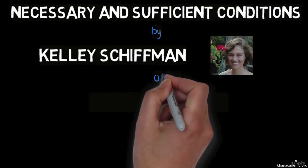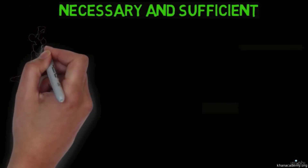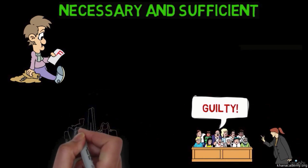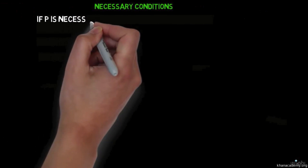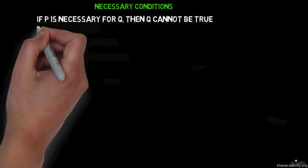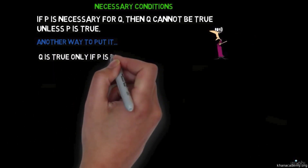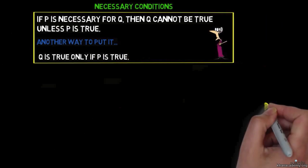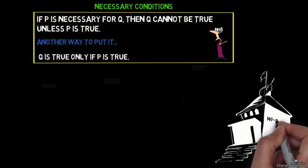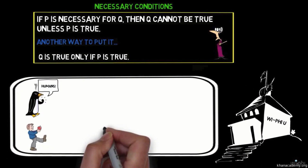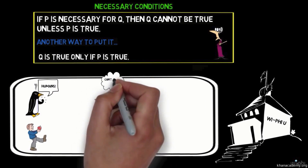I'm Kelly Schiffman, a Ph.D. student at Yale University, and today I want to talk about necessary and sufficient conditions. We hear these words all the time: merely taking the test isn't sufficient for passing it; pain is a necessary part of every human life. If P is necessary for Q, then Q cannot be true unless P is true — Q is true only if P is true. For example, necessary conditions for getting accepted to a university include being human, submitting an application, and having decent grades.